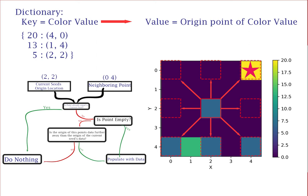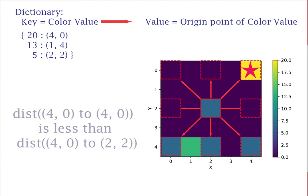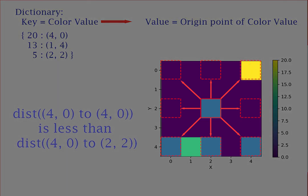And the distance from this neighbor point at 40 to the current seed at 22 is about 2.83. 0 is clearly less than 2.83, so the value 20 stays the value at this point.